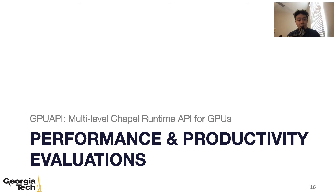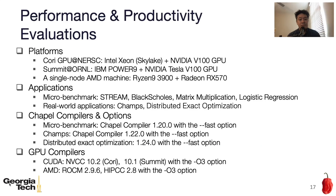Now I'll talk about performance and productivity evaluation. We evaluated our Chapel GPU program on three platforms. The first is the Cori GPU Cluster at NERSC, which has Intel Xeon Skylake CPUs and NVIDIA Volta V100 GPUs. The second is Summit at ORNL, which has IBM Power9 CPUs and NVIDIA V100 GPUs. The third is a single-node AMD machine with Ryzen 9 CPUs and Radeon ROX GPUs. We used several microbenchmarks including stream, Black-Scholes, matrix multiplication, logistic regression, and two real-world applications. However, in the interest of time, we will only focus on the two real-world applications: CHAMPs and distributed exact optimization.